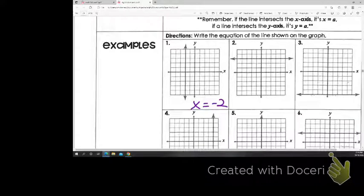So for number two, X equals or Y equals? Y, right? It's a horizontal line. So it crosses the Y axis, so it's going to be Y equals 3. So it is this line.